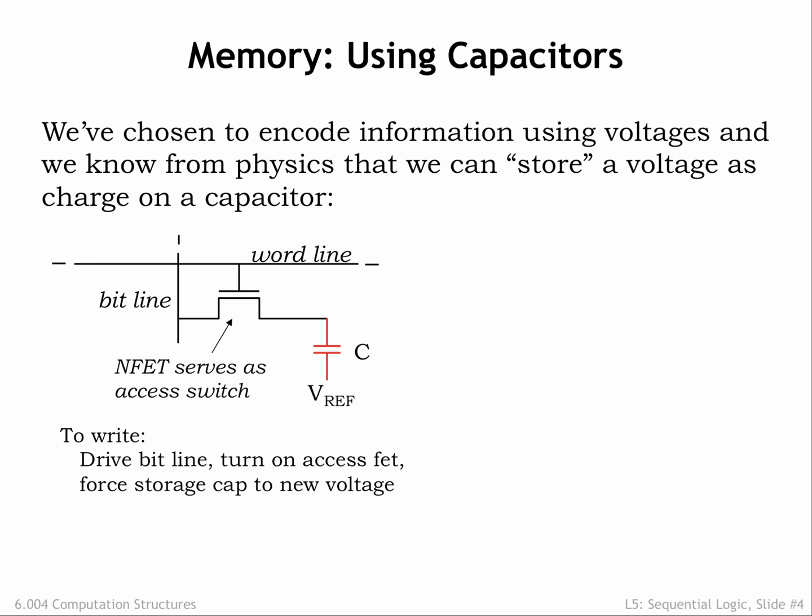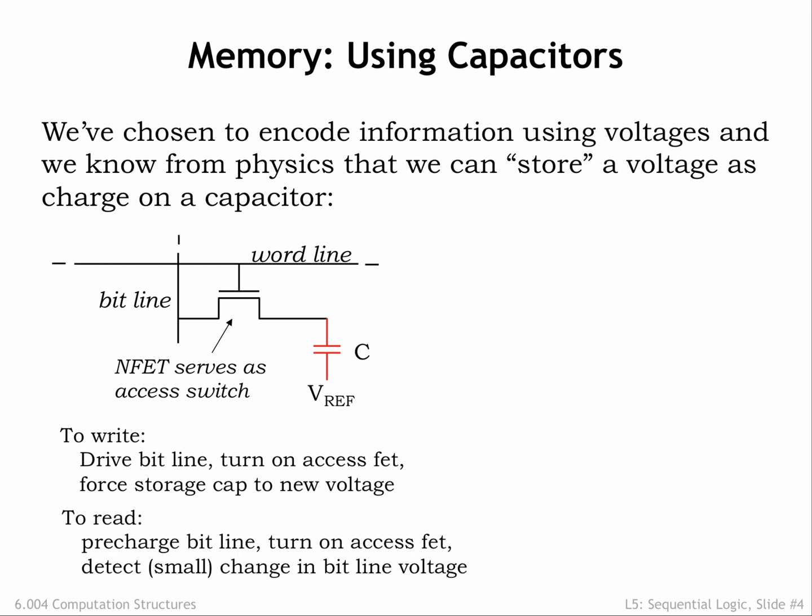In a perfect world, the charge would remain on the capacitor's plate indefinitely. To access the stored information at some later time, we first charge the bitline to some intermediate voltage, then set the wordline HIGH, turning on the NFET switch, which connects the charge on the bitline to the charge of the capacitor. The charge sharing will have a small effect on the bitline's voltage. If the capacitor was storing a digital 1 and hence was at a higher voltage, charge flows from the capacitor into the bitline, raising the bitline voltage. If the capacitor was storing a digital 0, charge flows from the bitline into the capacitor, lowering the bitline voltage. The change is usually quite small; a very sensitive amplifier called a sense amp is used to detect that small change and produce a legal digital voltage as the value read from the memory cell.